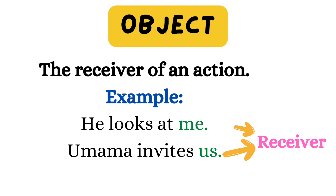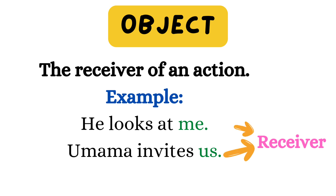Now let's talk about objects. What are objects? The object is having something done to it, or the receiver of an action. For example, he looks at me — he is doing the action, so he is the subject. But who is receiving the action? Me. Me is an object. Next: Umama invites us. Us is an object because us is receiving the action.